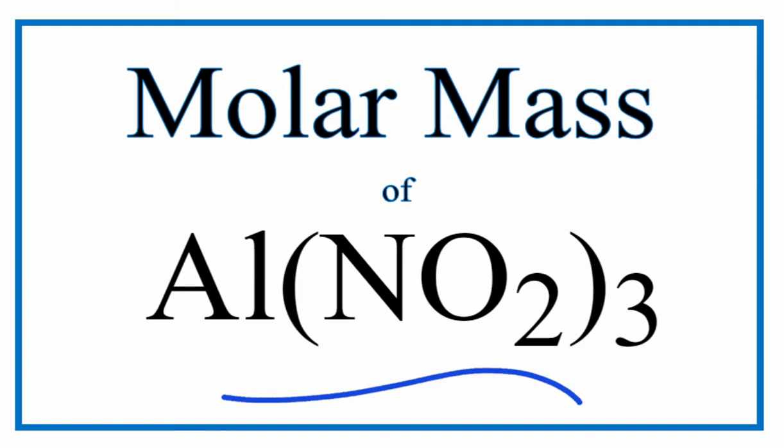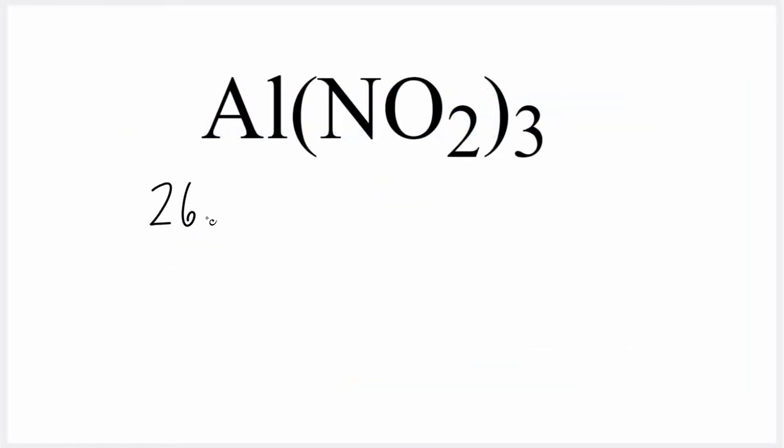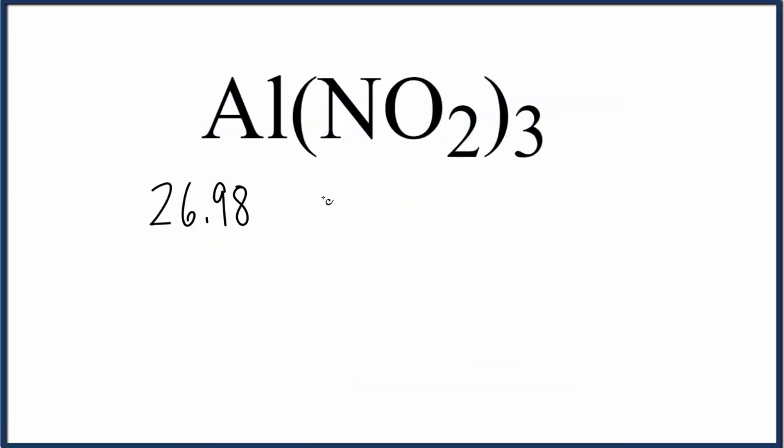To find the molar mass for aluminum nitrate, we go to the periodic table. Aluminum is 26.98 grams per mole plus, put a parenthesis here.